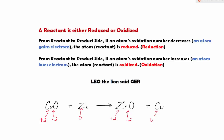In the last lesson, we talked about identifying the oxidation number of all the elements in a chemical formula. In this lesson, we are going to look at the changes from the reactant to the product side — that is to say, whether the reactant is being reduced or oxidized.